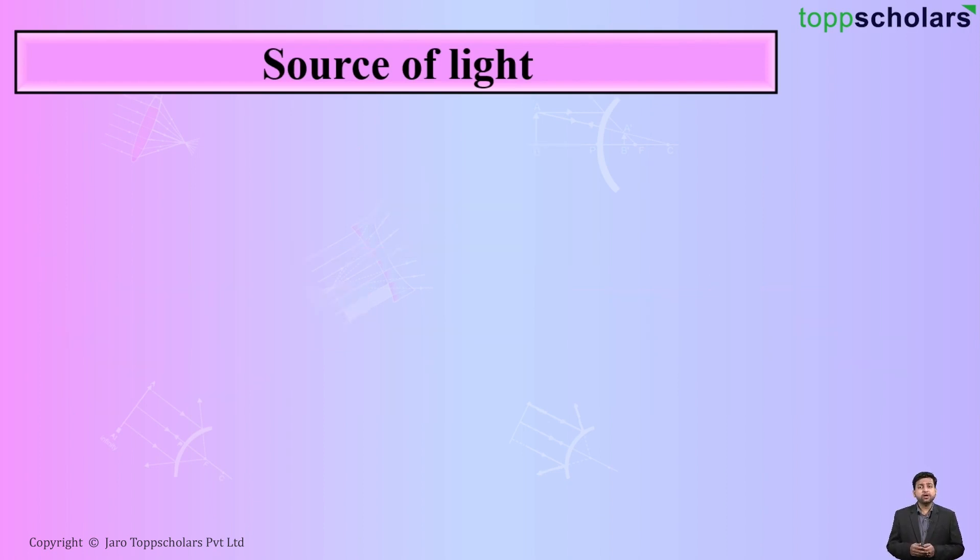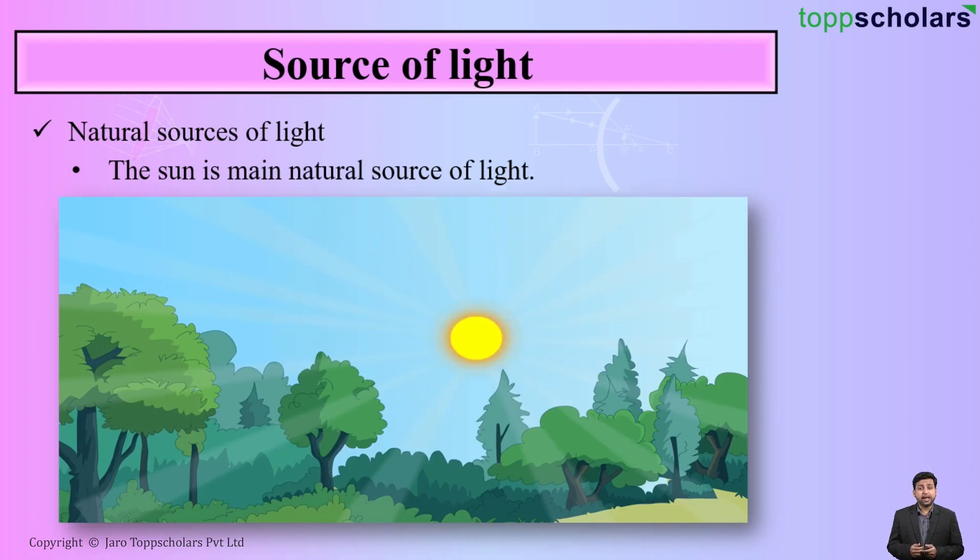Let us start with your first that is natural source of light. What do you understand by natural source of light? Basically natural source of light, the sun is the main natural source of light. Natural source of light means the light which is produced in the atmosphere or in the environment without any human involvement.